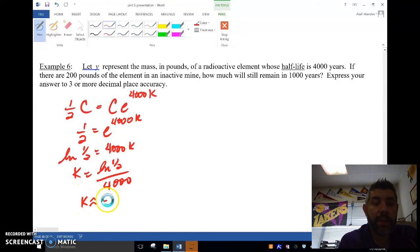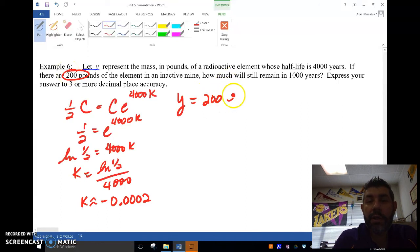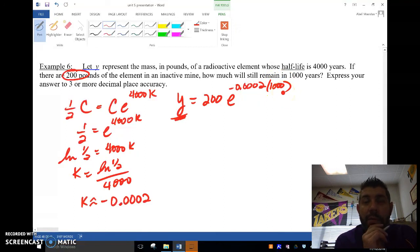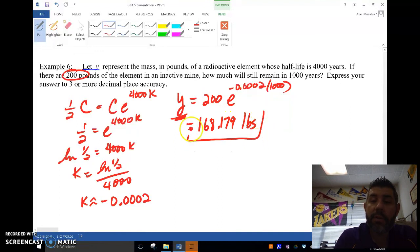That's approximately negative 0.0002. Now that I know that, I'm gonna put that in my formula. So y equals—what's my initial? If there are 200 pounds of element—200 e to the negative 0.0002. How much will remain in 1,000 years? So we're gonna plug in 1,000 for our t and calculate that out in our calculator, and we're gonna get 168.179 pounds.